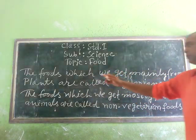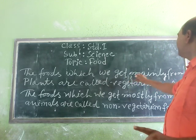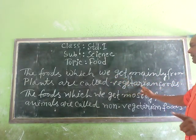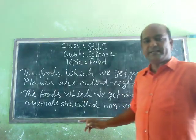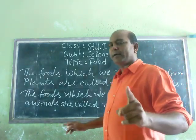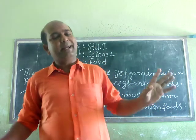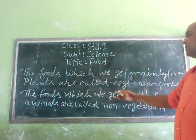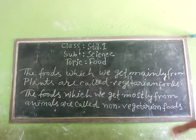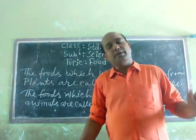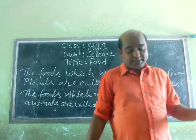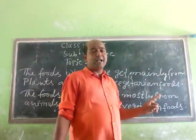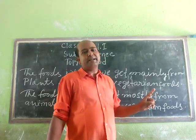Vegetarian food: the foods which we get mainly from plants are called vegetarian food, such as rice, green vegetables, corn, butter, and fruit. The foods which we get mostly from animals are called non-vegetarian food. Vegetarian food are good for health and mind.